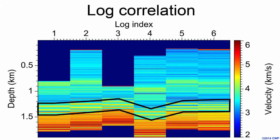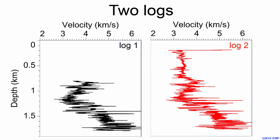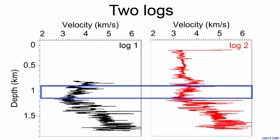Our method uses pairwise correlations in order to simultaneously correlate many logs. I'd first like to describe how we automatically correlate a single pair of well logs, using logs one and two from earlier. It is common to process logs before correlation in order to remove large measurement errors that are common in logs, but we have done no such preprocessing to any of the logs I will show today. Therefore, large measurement errors still exist — I've just pointed out three here.